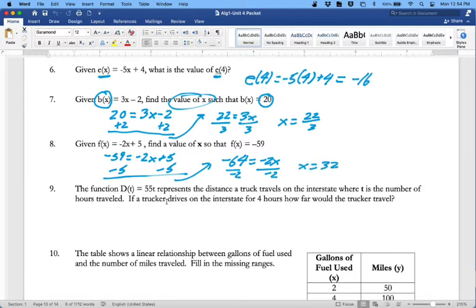On nine, we're trying to figure out how far a truck driver is going to drive, so we're going to solve d of 4, which is 55 times 4, or 220 miles. That would make sense.